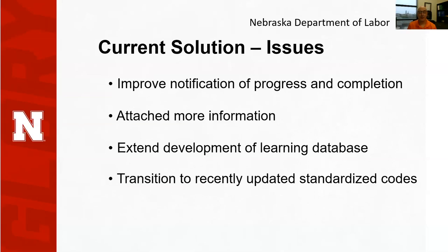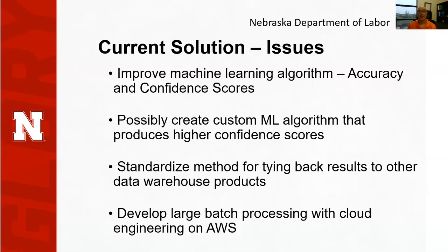I have no idea if it's working or not. I would like to have some kind of notification of progress and when it's actually completed. I'd like it to attach more information. I'd like to extend the development of the learning database. We need to transition to recently updated standardized occupation codes. We need to improve the machine learning algorithm — both its accuracy and the confidence scores — and it might even be that you get to develop your own customized machine learning algorithm. We want to standardize a method for tying back results to other data warehouse products, and we want to develop large batch processing with cloud engineering on AWS.